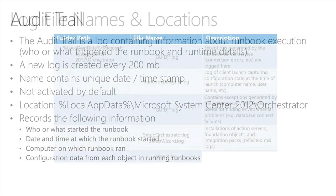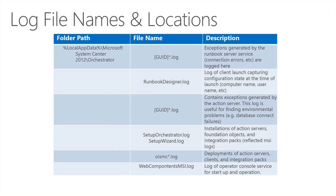There are different log files for every component of your Orchestrator environment, which can be enabled and configured in the registry. These include log files for the runbook designer, Orchestrator setup, and web components. The most important are those used by the runbook server and for problems like database connection failures. These log files use a GUID as their filename.